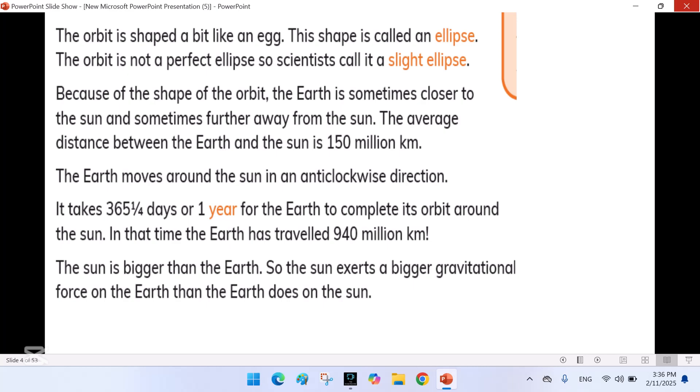Because of the shape of the orbit, the earth is sometimes closer to the sun and sometimes further away from the sun. The average distance between the earth and the sun is 150 million km.